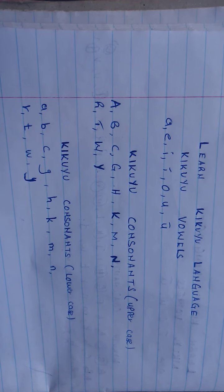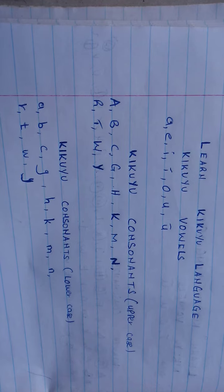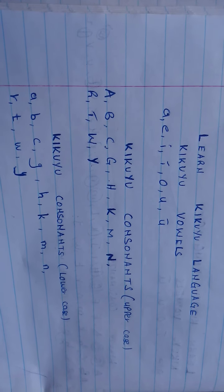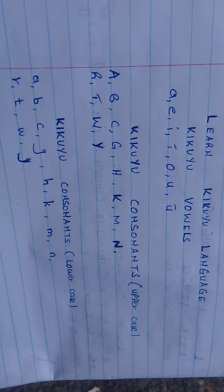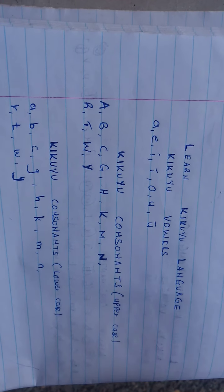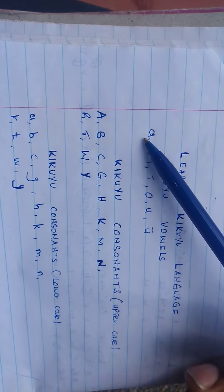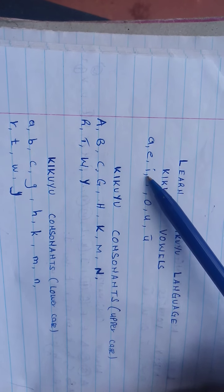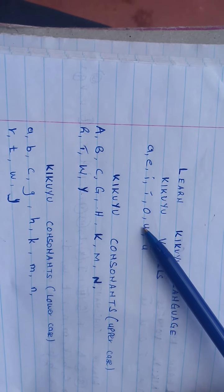For us then to be able to learn the Kikuyu language, we start by learning the Kikuyu vowels. The Kikuyu vowels are seven in number. Here we have one, two, three, four, five, six, and seven.